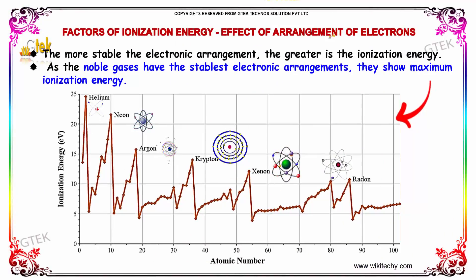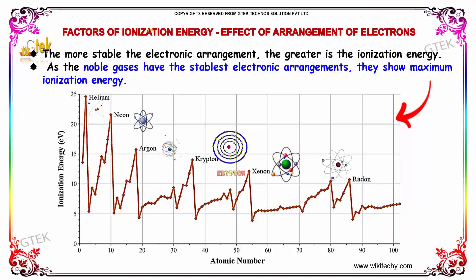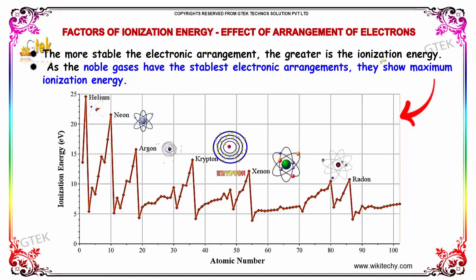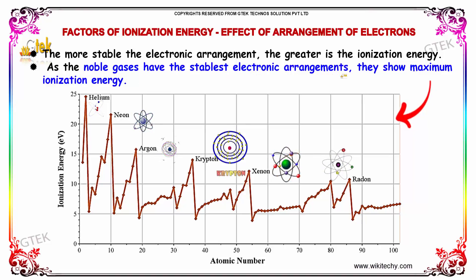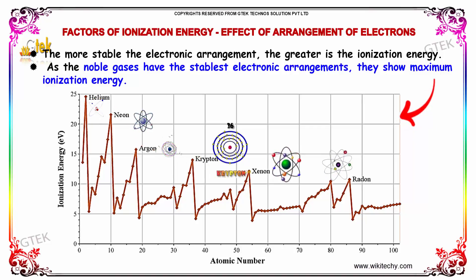The effect of the arrangement of electrons is another factor affecting ionization energy. The more stable the electronic arrangement, the greater is the ionization energy. As the noble gases have the most stable electronic arrangements, they show maximum ionization energy. These include Helium, Neon, Argon, Krypton, Xenon, and Radon.